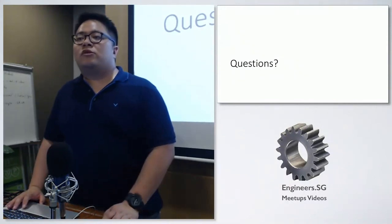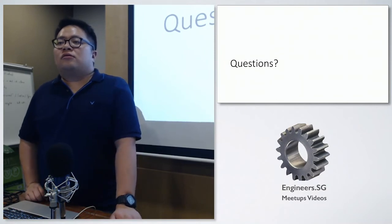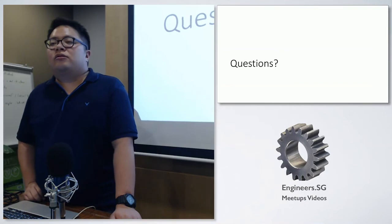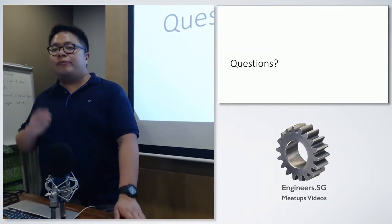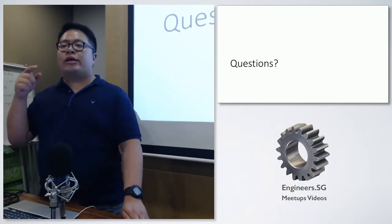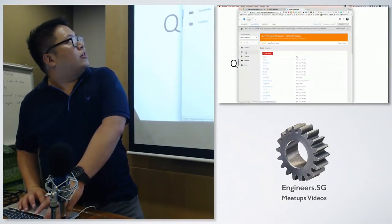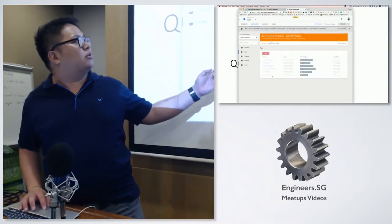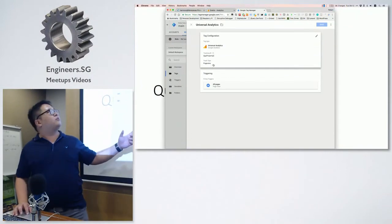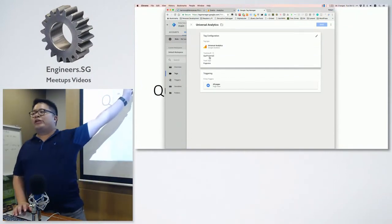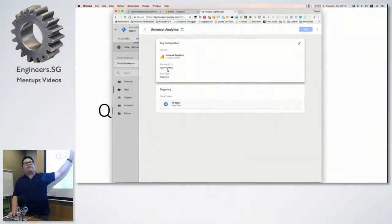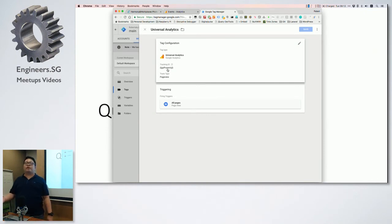Q&A: Someone asks about using both a GTM plugin and MonsterInsights. You should use only one, not both. The reason: GTM already has Google Analytics set up inside it. If you also use another plugin that adds the tracking code, you'll have the tracking code embedded on the website two or even three times, depending on how many plugins you're using.